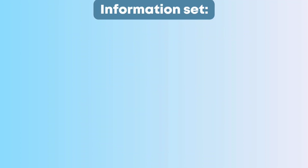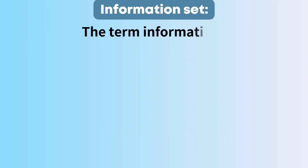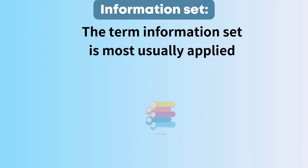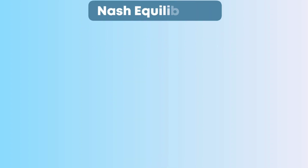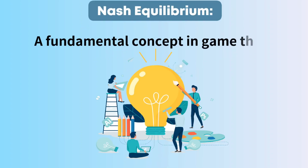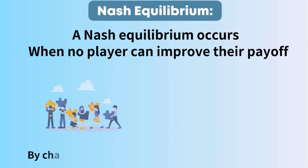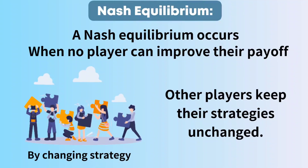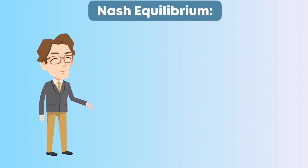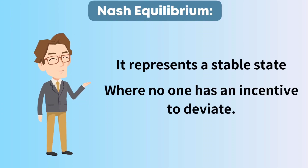Information set: the information available at a given point in the game. This term is most usually applied when the game has a sequential component. Nash Equilibrium: a fundamental concept in game theory. A Nash Equilibrium occurs when no player can improve their payoff by changing their strategy while the other players keep their strategies unchanged. In other words, it represents a stable state where no one has an incentive to deviate.